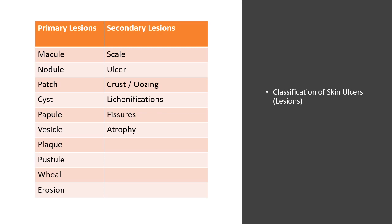A nodule is raised and large — like a lipoma that you can palpate — greater than a centimeter in diameter. Cysts are nodules filled with liquid or semi-solid material that can be expressed, like a sebaceous cyst. Plaques are raised and large, like psoriasis or seborrheic keratosis, greater than a centimeter. Vesicles or blisters are raised and small, like acute dermatitis or herpes zoster. Bullae are raised and large — burns or blisters greater than a centimeter. A wheal is raised and irregularly shaped, like urticaria (hives) from an allergic reaction or insect bites.